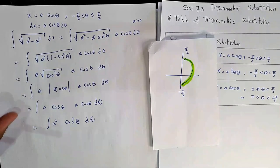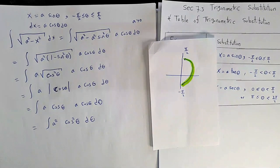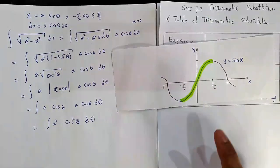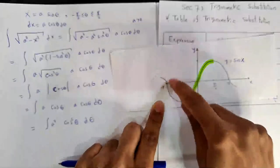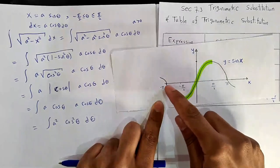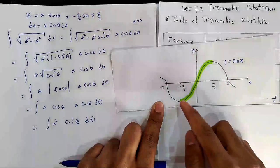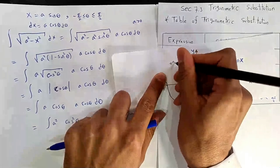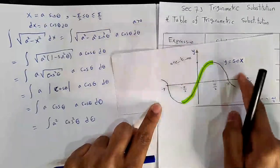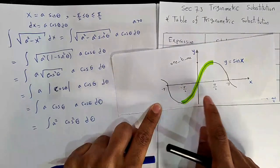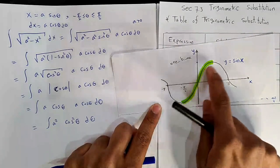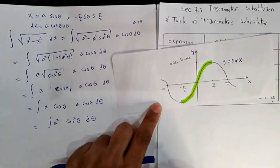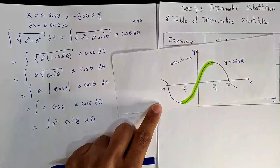Why did we choose this specific interval? Recall the graph of sin x. From -π/2 to π/2, this is the restricted domain that makes sin x one-to-one. Without restriction it fails the horizontal line test. Once we restrict to [-π/2, π/2], we get a one-to-one function and can define the inverse.